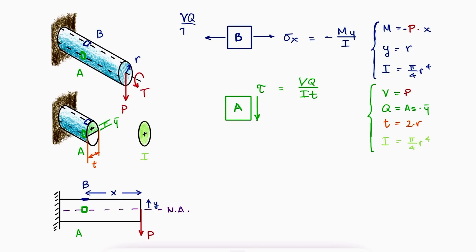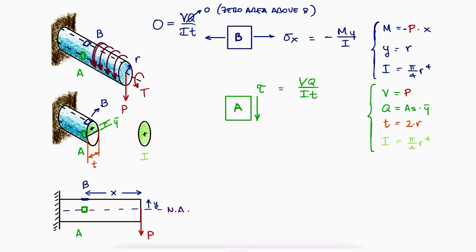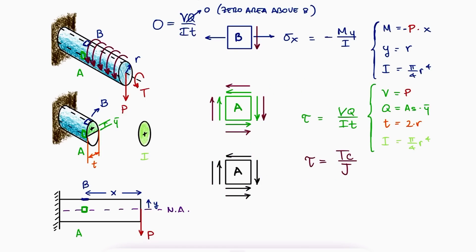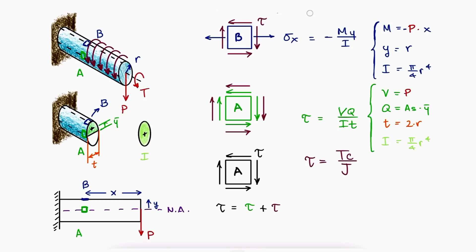If we look at this shearing stress equation for stress element b, we would see that the value of Q is zero and therefore b is not subjected to this shearing stress. However, due to the external torque T, both stress elements a and b are subjected to a torsional shearing stress. The total stress of element a is just the sum of the two shearing stresses. For stress element b, however, we have both a normal stress and a shearing stress.